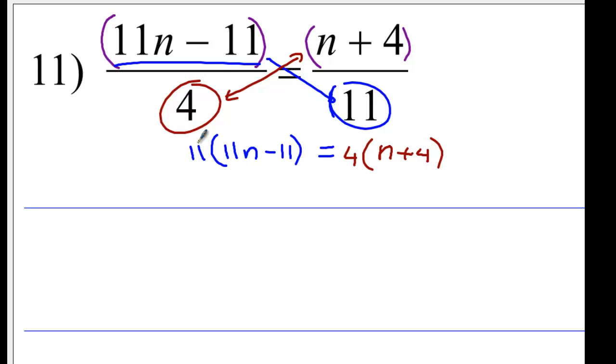And then, 11 times 11 is 121n, 11 times negative 11 is negative 121, and you have an equal sign. 4 times n, that'd be 4n. And then, 4 times 4 equals 16.